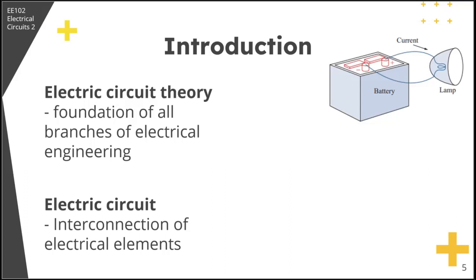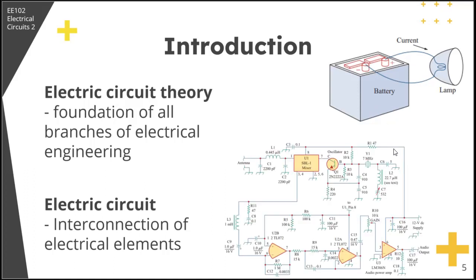It can be a simple electric circuit consisting of three basic elements: a battery, a lamp, and connecting wires. Or a circuit can be a complicated one, just like a circuit of a radio receiver. Our goal in this course is the analysis of circuits — that is, the study of the behavior of the circuit, such as how it responds to a given input or how the interconnected elements interact.